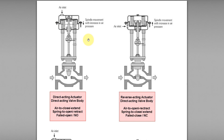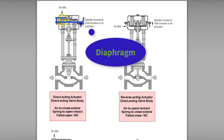A control valve basically consists of two main portions: the actuator portion and the valve body portion. The actuator consists of two parts — the upper part and the lower part — and they are separated by a diaphragm.